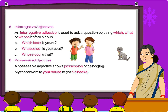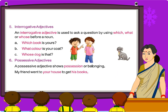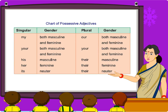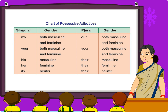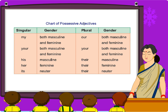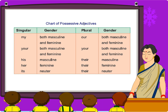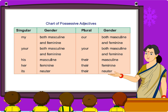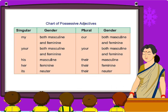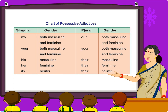Possessive adjectives. A possessive adjective shows possession or belonging. For example: 'My friend went to your house to get his books.' Chart of possessive adjectives — Singular: My (both masculine and feminine), Your (both), His (masculine), Her (feminine), Its (neuter). Plural: Our (both), Your (both), Their (masculine), Their (feminine), Their (neuter).